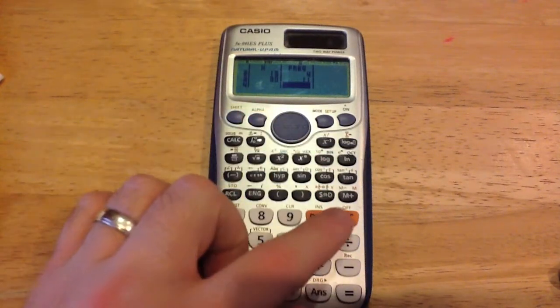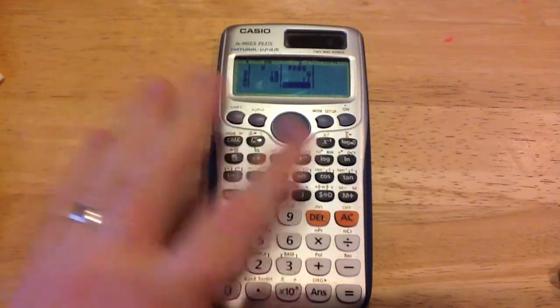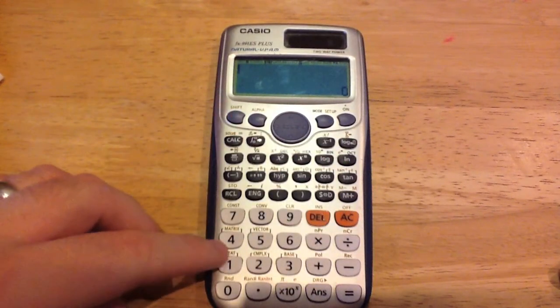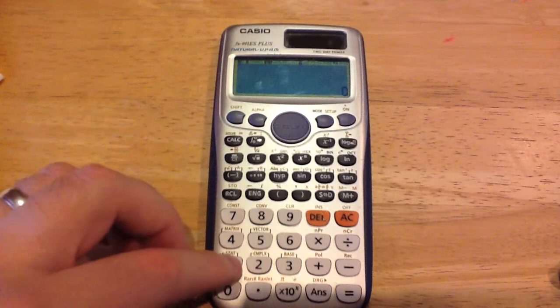And what we're going to now do is we're going to press the AC button, don't worry, this data has been stored, so we press AC, and then we want this stats mode on the calculator here, so we're going to press Shift, and then stat.